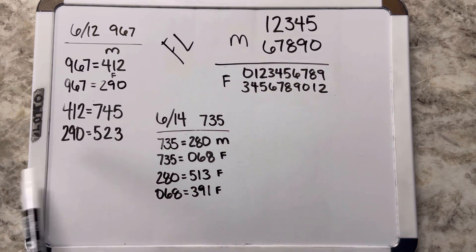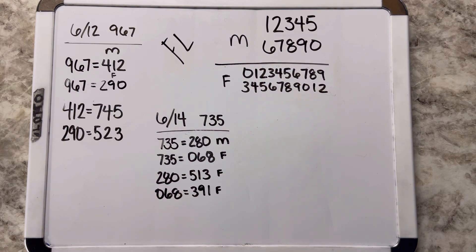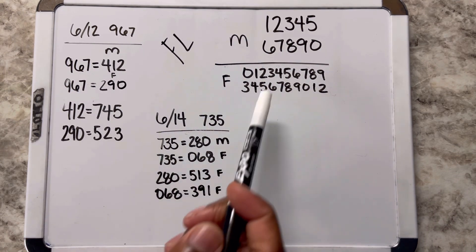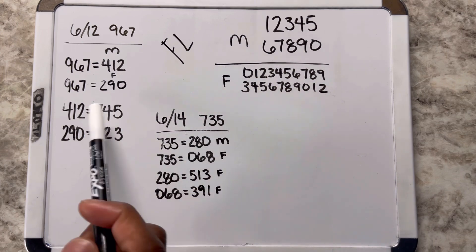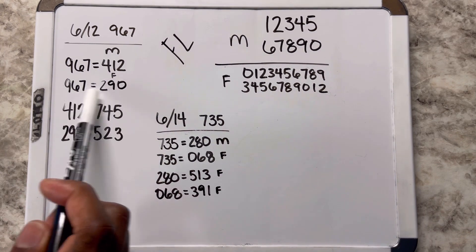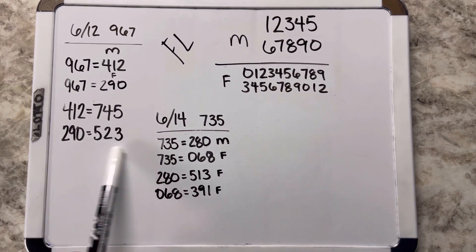412, I converted that into the flip number, so we got 745. The 4 is a 7, the 1 is a 4, and the 2 is a 5. Then I did the same thing for 290, which gave us 523.